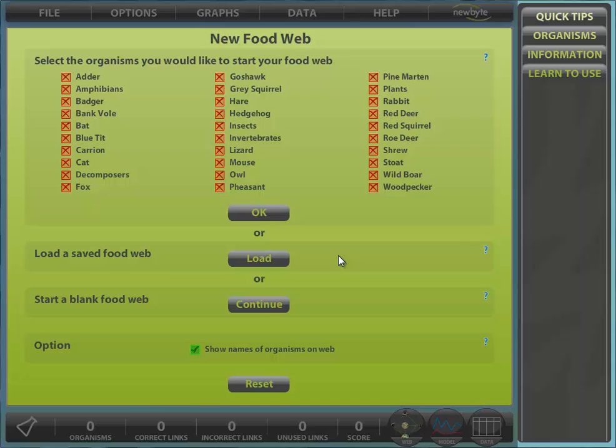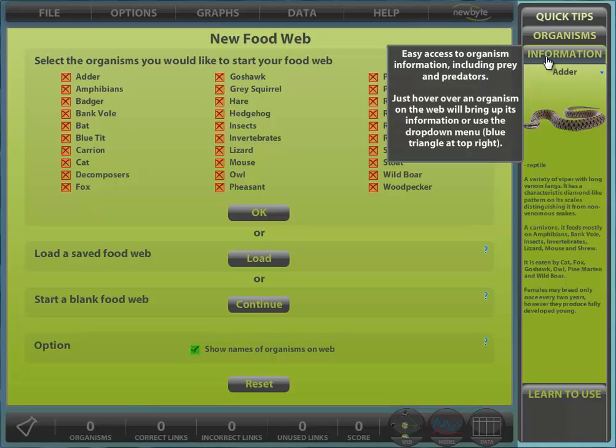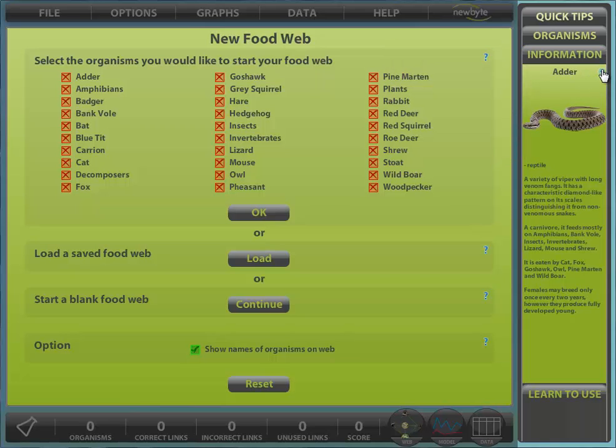It's very easy to add or remove organisms using the Organisms panel to the right after you have started your FoodWeb. You have access to the information panel at this time, so it's easy to check the prey and predators of any organism.